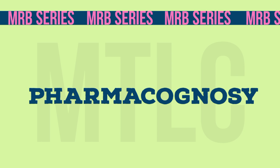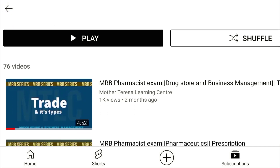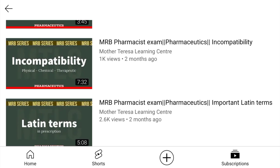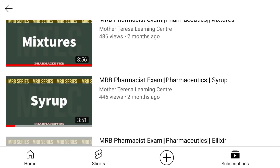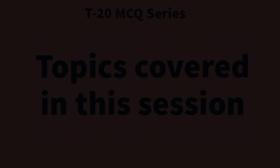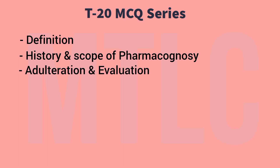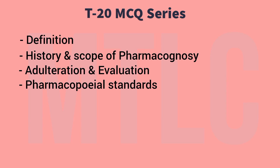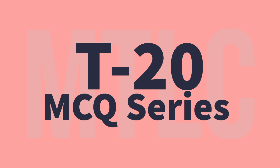Now I will talk about objective type questions. Most of the questions I am going to cover in the video lectures, so if you look at the MCQs, you can answer them. There are 20 questions in a video — it is a 2020 series. The first set covers Definition, History and Scope of Pharmacognosy, Adulteration, Drug Evaluation, and Pharmacopial Standards. It is just a practice session — there are possibilities for questions. Wish you all the best to get good marks in MRB.